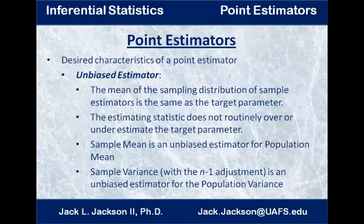If we take the sample means, we know from earlier that the distribution of sample means has its own distribution — more likely to be normal or close to normal — and it has its own mean, the mean of the means. We want that mean of the means to be the same as the mean of the general population, and it actually is. So the sample mean is an unbiased estimator — it does not routinely over or underestimate the target parameter. The sample mean is an unbiased estimator for the population mean.